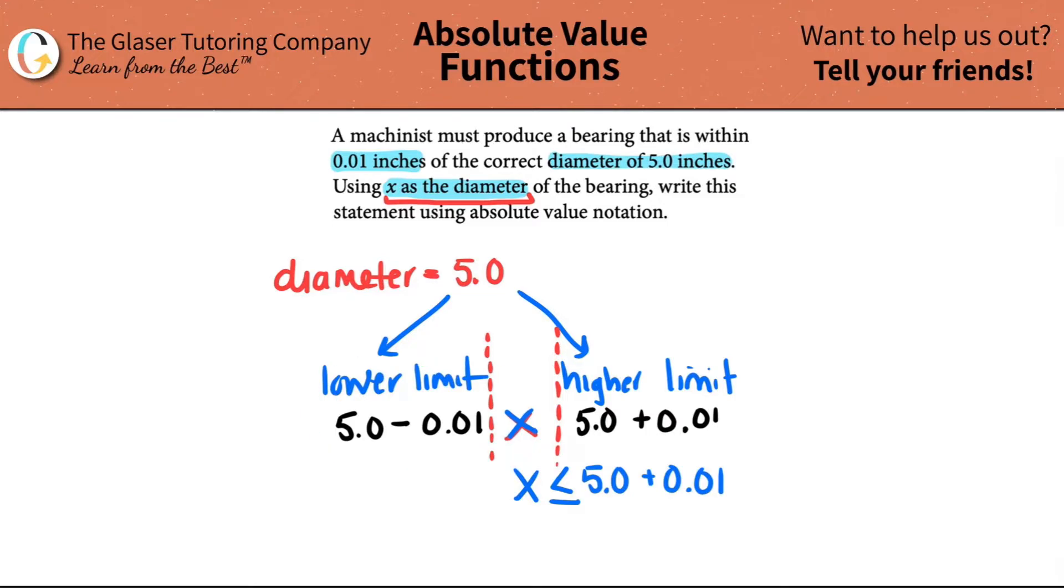Now let's look at the lower limit. This is the actual lowest that you can go, so 5.0 minus 0.01. Between x and the lower limit, x has to be the greater than number. And it's not a coincidence that these two are the same sign. They have to be when you're writing it in this type of notation.